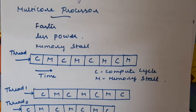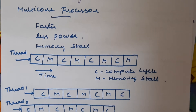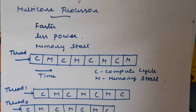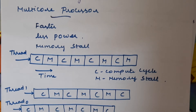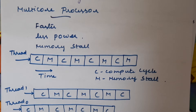The next topic is multi-core processor. This is not actually different from multiprocessor — it is somewhat similar — but the difference is that in the same chip we will have more than one processor core. That is what a multi-core processor is. In a multiprocessor, physically we have separate chips and each chip has a separate processor, whereas in multi-core we have many different processor cores available within a single chip.